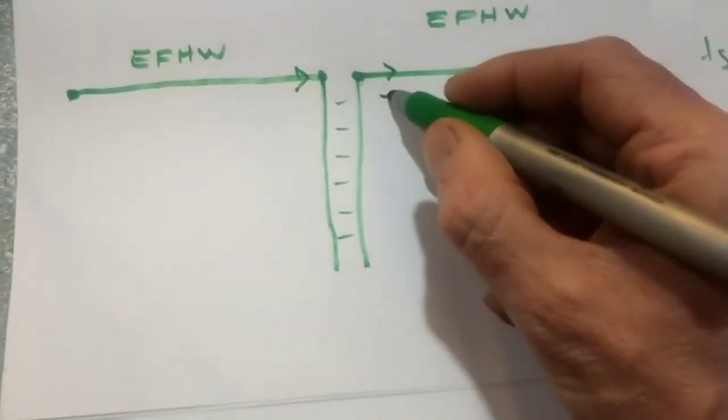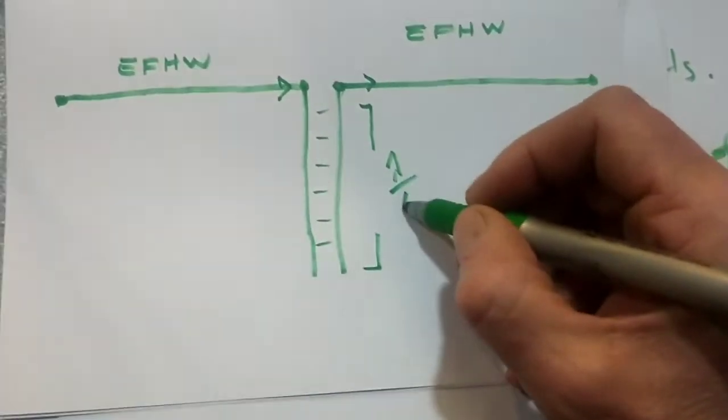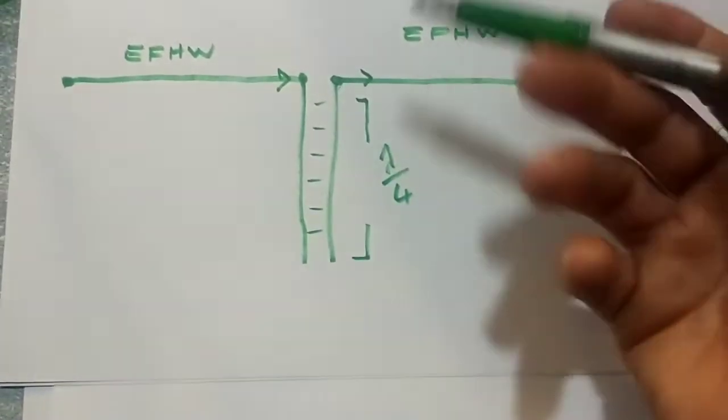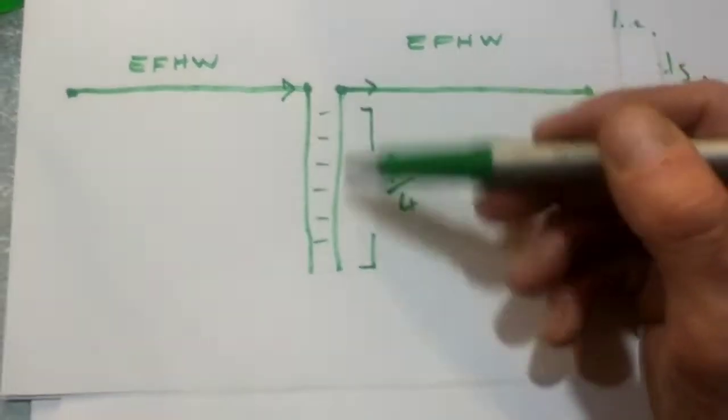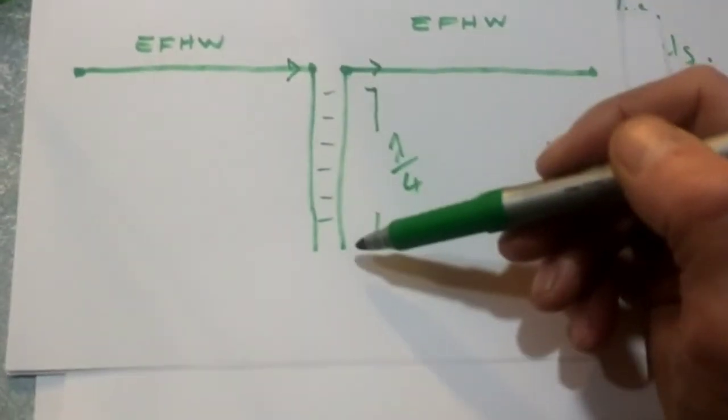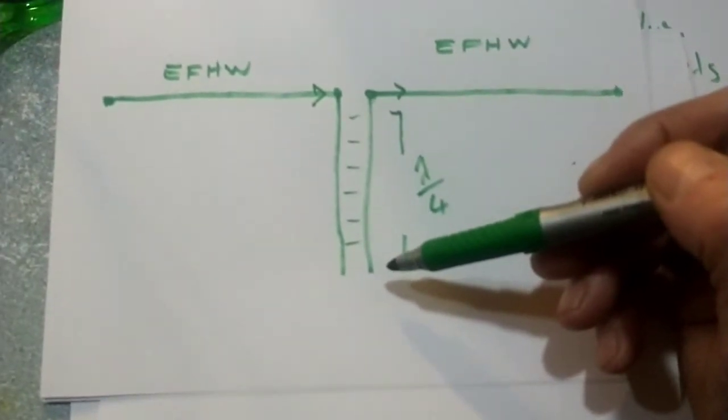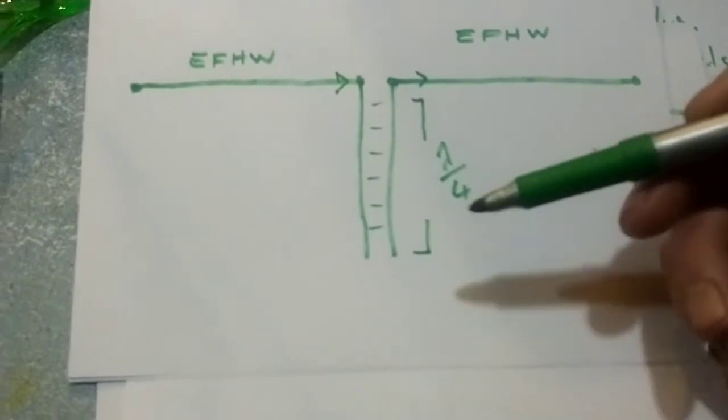You have to make your balanced line one quarter wave. Of course, you have to factor in the velocity factor. My window line is 450 ohm with a 91% velocity factor. So you work out your quarter wave in free space, then you times that by 0.91, and then you've got the length that you need for your balanced line.